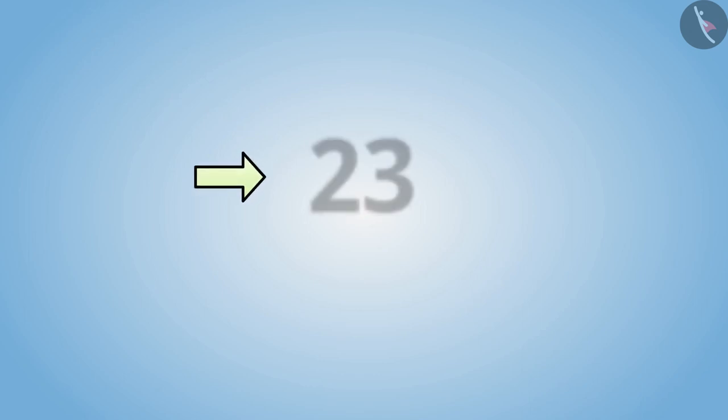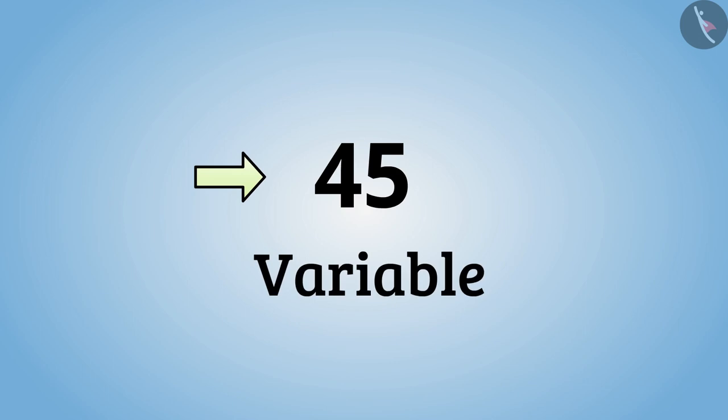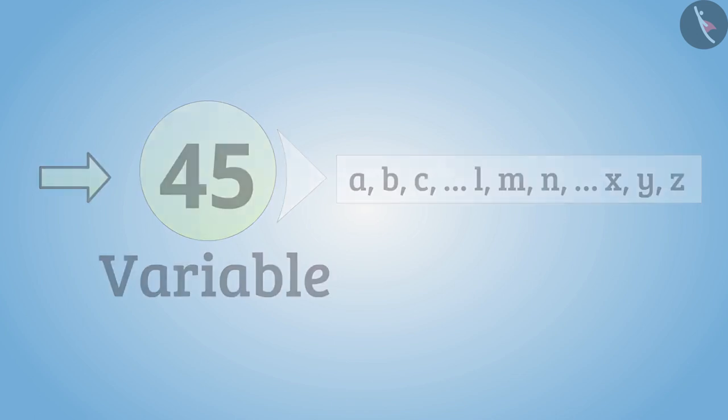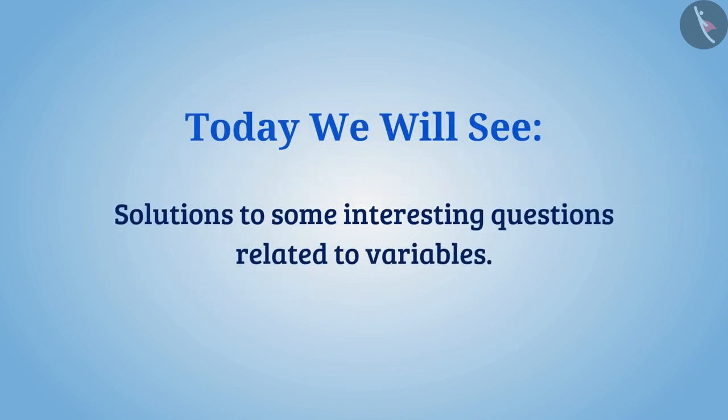So far we have learned that a number which can vary is called a variable. To represent such numbers we can use letters of the English alphabet. Let us now find solutions to some interesting questions related to variables.